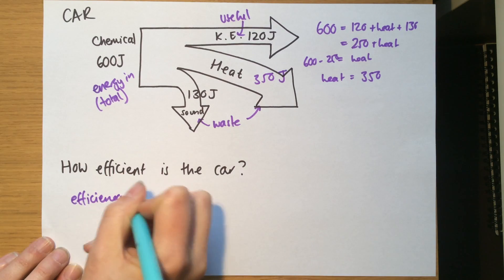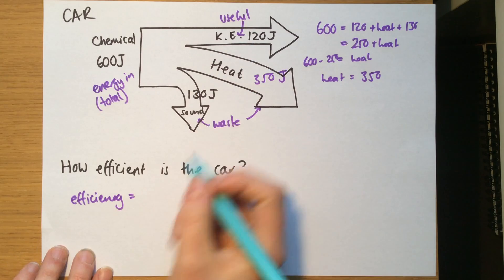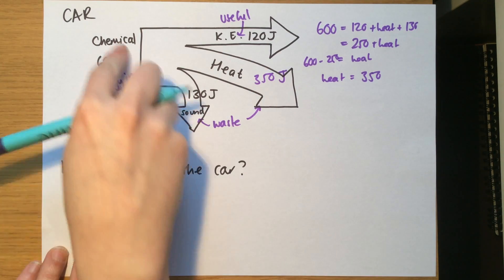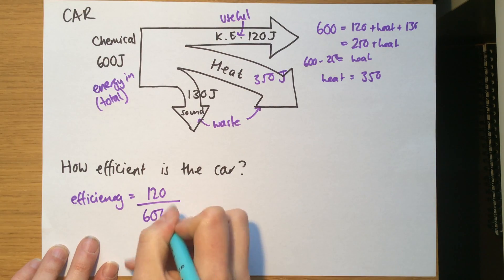The useful energy efficiency is the KE, that's 120 joules. The total energy in is at the start, the chemical energy from the petrol, that's 600. And we times that by 100 percent.